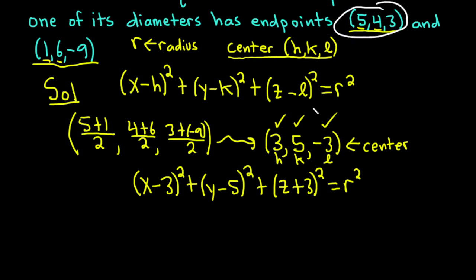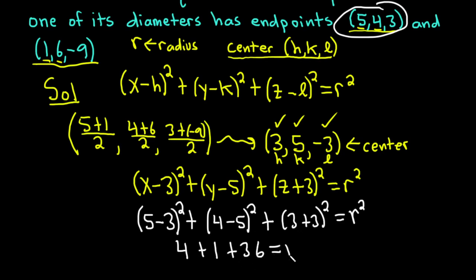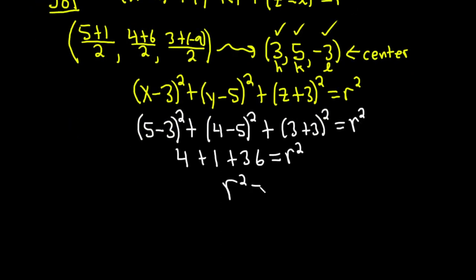Plugging in (5, 4, 3): (5 - 3)² + (4 - 5)² + (3 + 3)² = r². That gives us 2² + (-1)² + 6² = 4 + 1 + 36 = 41 = r². We don't actually need to find r itself, because we just need r² for the formula.